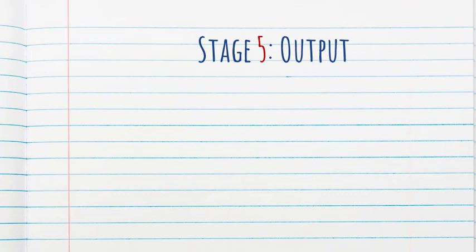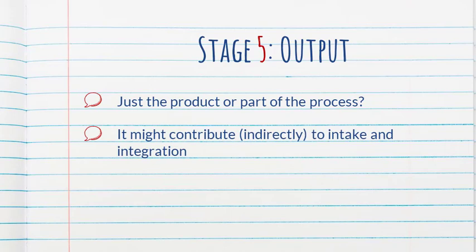And the last puzzle piece, according to the author, is output. And yes, you may have read that and thought, wait a minute, this is a puzzle piece of acquisition? Well, there's two perspectives on it. Is it a puzzle piece? Or is it the actual puzzle? One perspective is that output is just the product or a manifestation of what has been integrated into the system. The other perspective is that it's not just the product, but also part of the process. And it could actually contribute, perhaps indirectly, to intake and integration. And as you can guess, the author leans towards the second perspective, that it could be considered a fifth puzzle piece, that it may play a role.